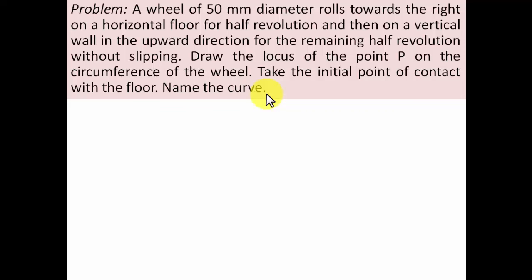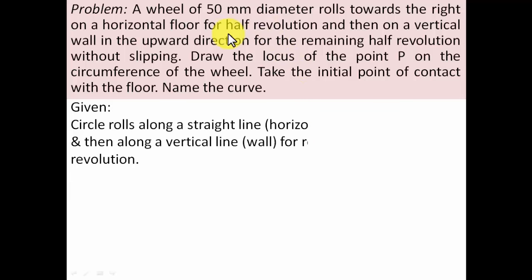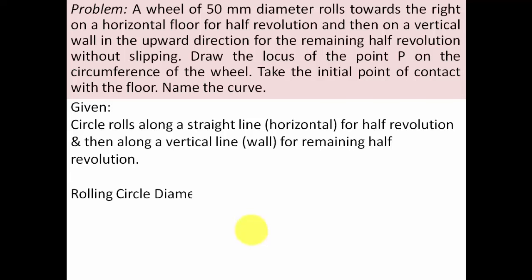We know that whenever a circle with a point on its circumference rolls along a straight line and you keep track of that point, it generates a curve known as a cycloid. The issue here is that this particular circle, having a diameter of 50mm, is rolling in two different ways — firstly along a horizontal line for half a revolution, and then the remaining half revolution it travels in the upper direction. All these things are to be incorporated in our drawing.